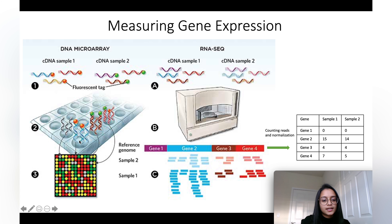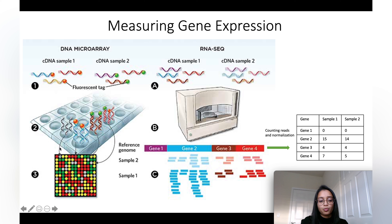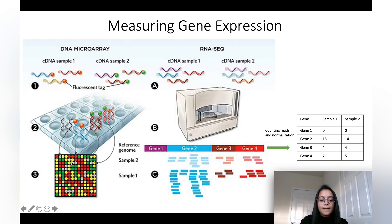Following that, the complementary DNAs are allowed to hybridize with probes — short DNA sequences complementary to the genes. The plate is then washed, and the unhybridized complementary DNA gets washed off, leaving a plate with different fluorescent intensities. Based on these intensities, we can identify what genes are expressed in one sample, both samples, or differentially expressed between samples.